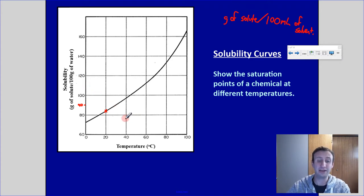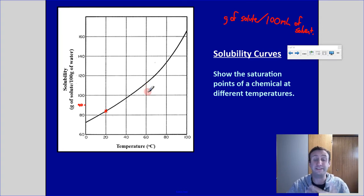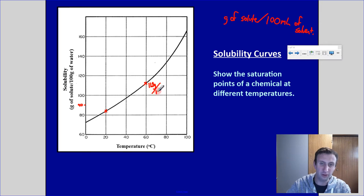As I get to a higher temperature, the solute becomes more and more soluble. For solids, as I increase temperature, solubility typically increases. For example, at 60 degrees Celsius the solubility goes up, and that value would be a little bit over halfway — so let's say around 112 grams per 100 milliliters.